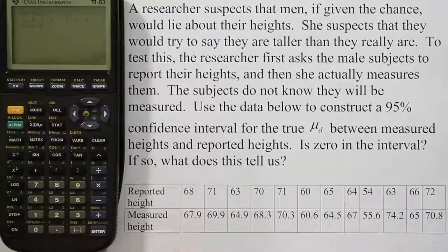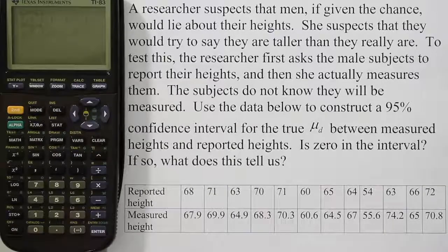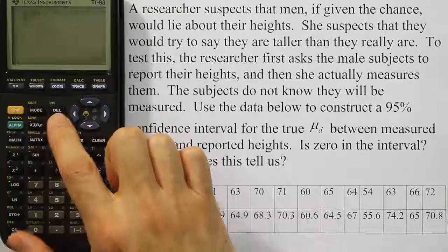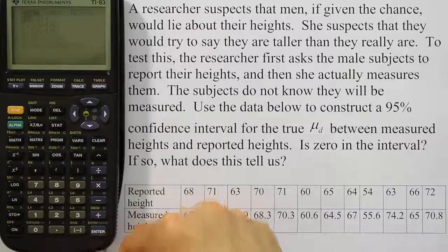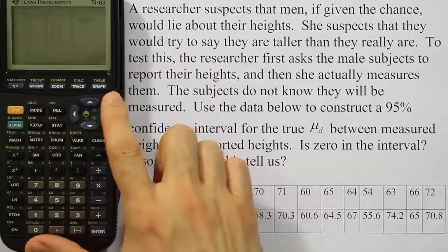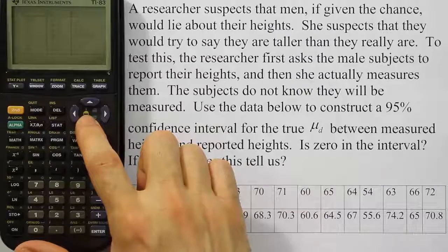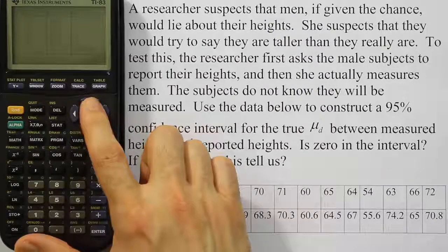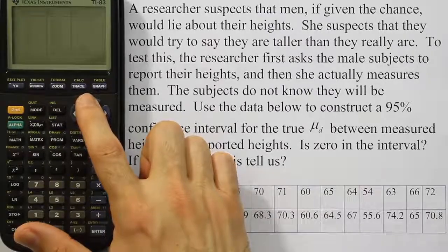I'll hit ENTER and those answers are now in my calculator in list three. I can confirm that by pressing the STAT key, hitting ENTER again to look at the EDIT menu. And when I go there, I see that L3 indeed contains all the values I just put there.